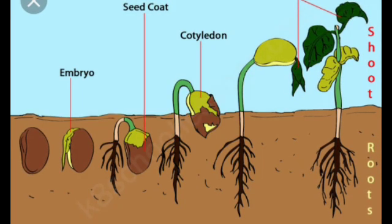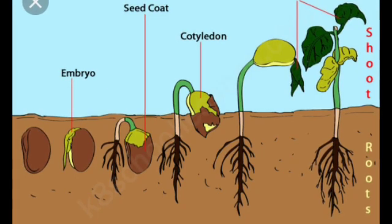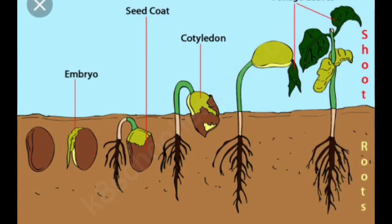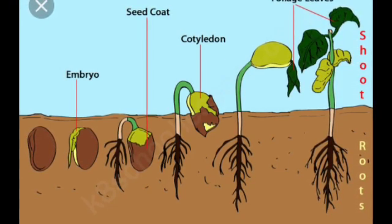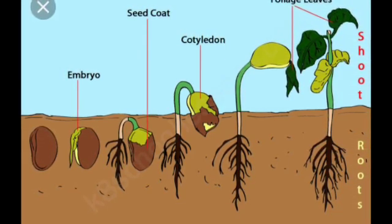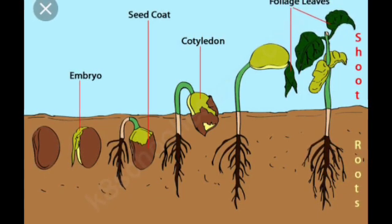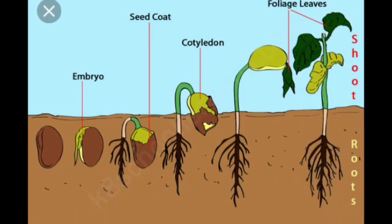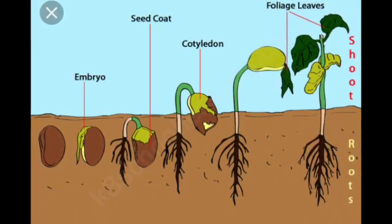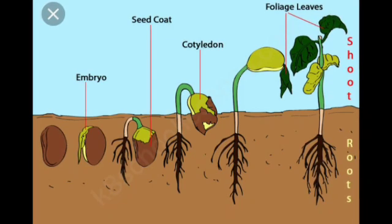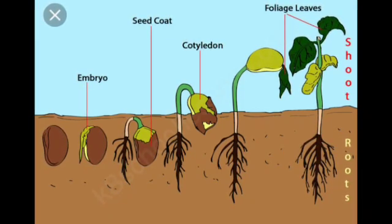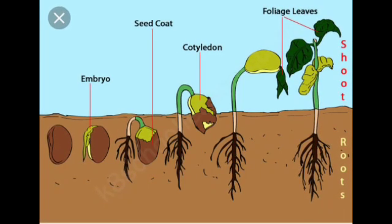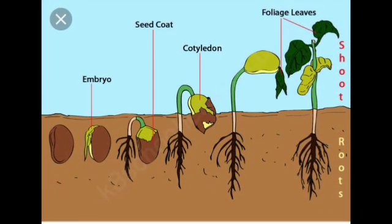Let's talk about germination stages. First, we plant a seed. Then, a small sprout appears. Then, a root grows in the plant. Then, the plant develops further. Then, the first leaf appears. Then, finally, a flower and fruit develop.